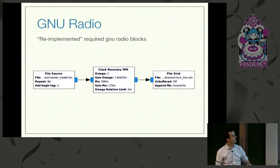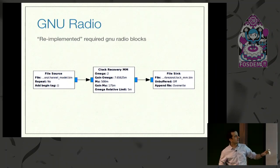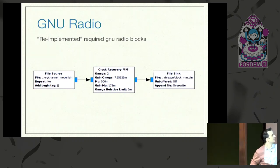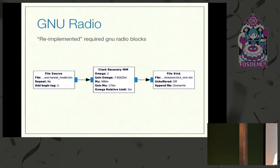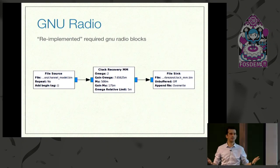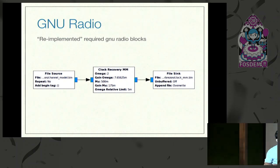I decided to implement interfaces and make my blocks binary compatible with the GNU radio blocks. The input parameters in my Java implementation are the same, and the output and input are the same. I created a file source, ran it through the relevant GNU radio block, and saved the output. Then I did the same in Java and compared the results. It actually worked — all my blocks are binary compatible up to five decimal places for floats.